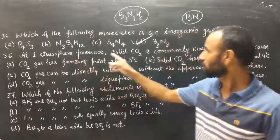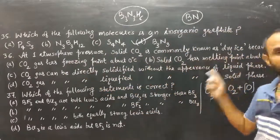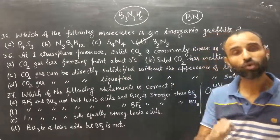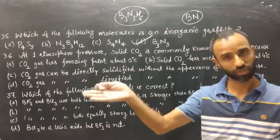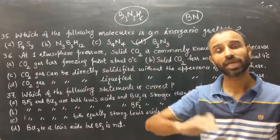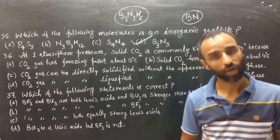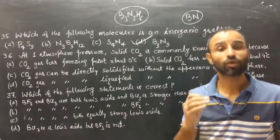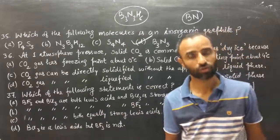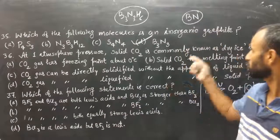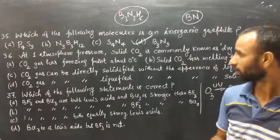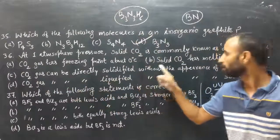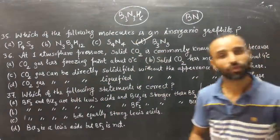Question 36: at one atmosphere pressure, solid CO2 is commonly known as dry ice. Solid CO2 is called dry ice because CO2 sublimes — it is directly converted from solid to gas without an intervening liquid phase, and therefore cannot wet cloth. The correct option is that CO2 gas can be directly solidified without the appearance of a liquid phase.